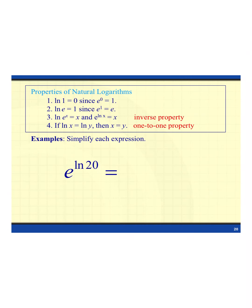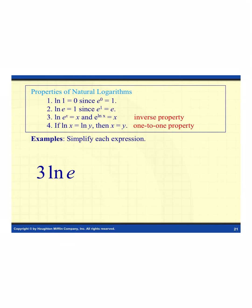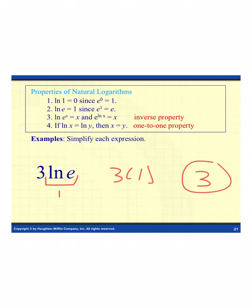Using property 3 again, we have e raised to a power involving a natural log. Since e and the natural log are inverses, they cancel out, leaving the value: 20. For the last example, we have 3 times ln(e). By property 2, ln(e) equals 1, so this becomes 3 times 1, which equals 3. That does it for our notes for this section — go ahead and get started on the homework, and good luck.